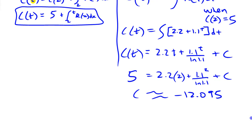Then our function would be c(t) equals this value, or this function with the constant substituted in there: 2.2t plus 1.1^t over ln(1.1) minus 12.095.